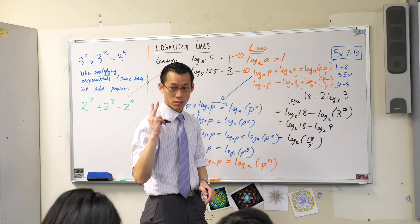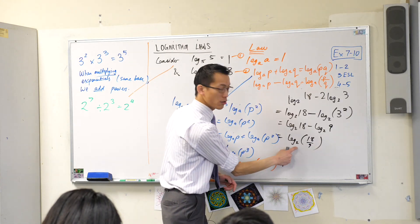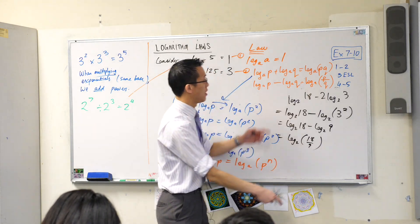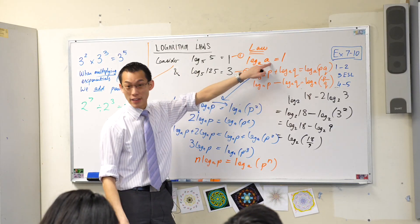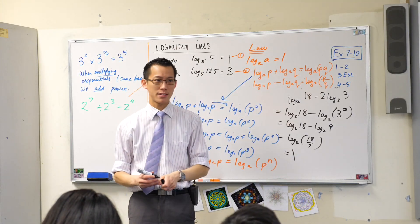So this is 18 on 9, which is just 2. Log base 2 of 2 because log base anything of the same thing will always be 1. Does that make sense?